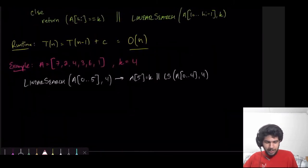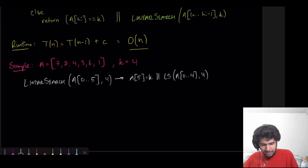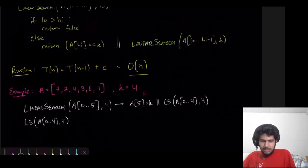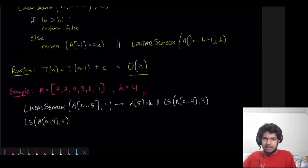So, we know that A of 5, is that equal to K? Well, let's look. That's equal to 1. That's not equal to K. So, this will evaluate to false. But this part still may be true. So, now we have to evaluate this. So, let's do it recursively. LS of A of 0 to 4, comma 4. First, we check, is low greater than high? It's not. So, we go here. And we're going to return basically the same thing as before, except high is now 4.